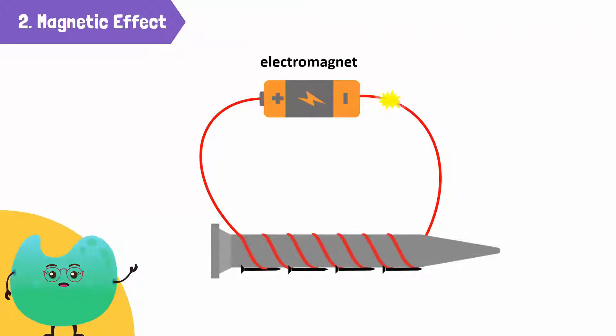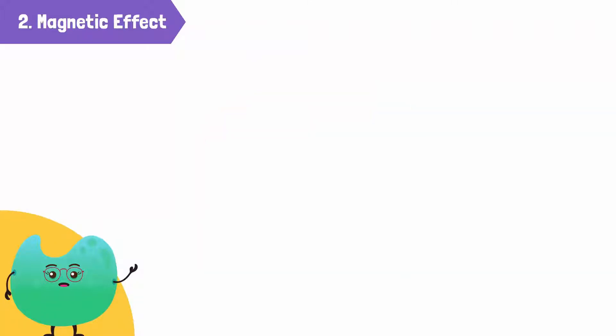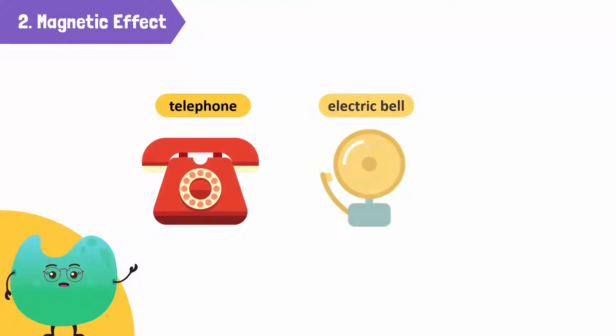When the current stops flowing, the electromagnet loses its magnetism. The application of this effect is used in telephones, electric bells, and loudspeakers.